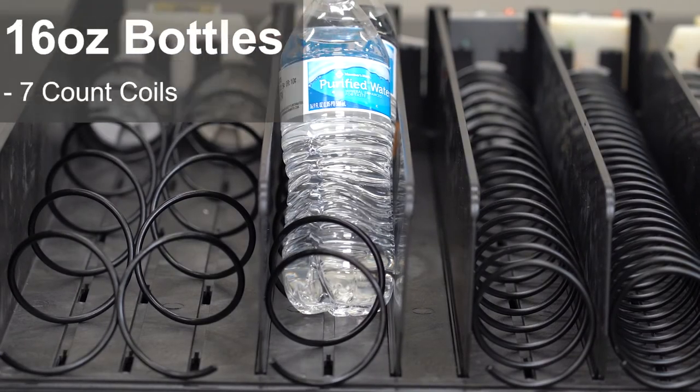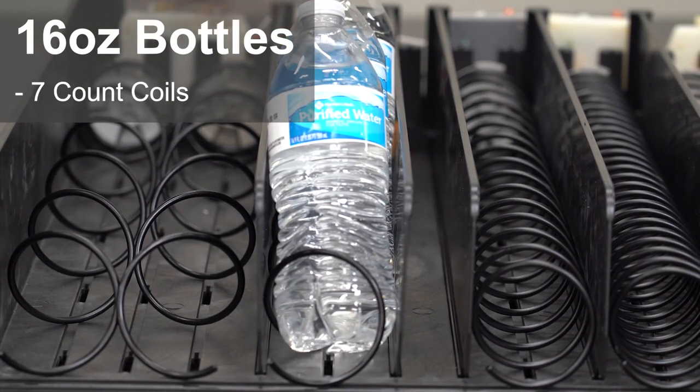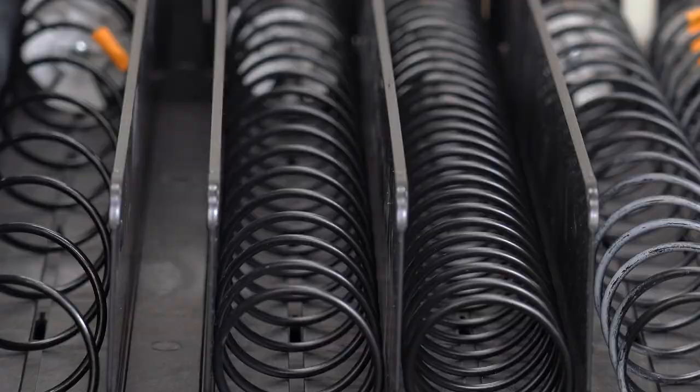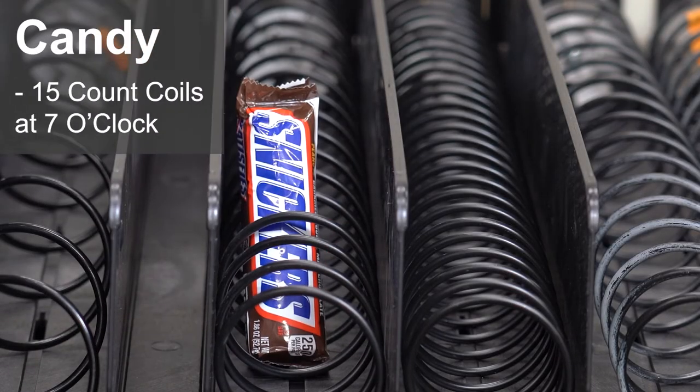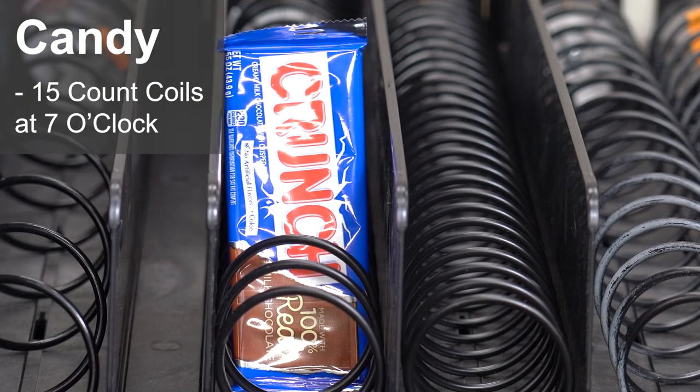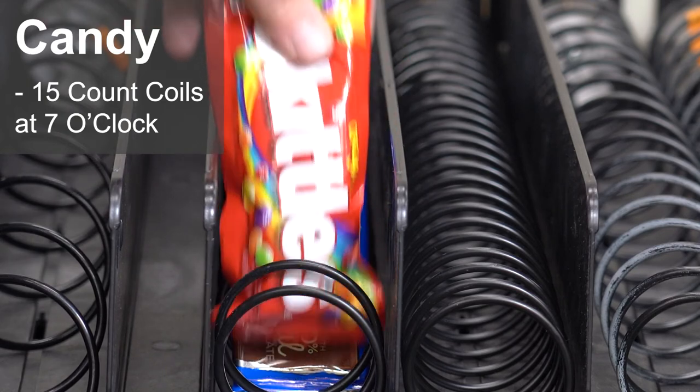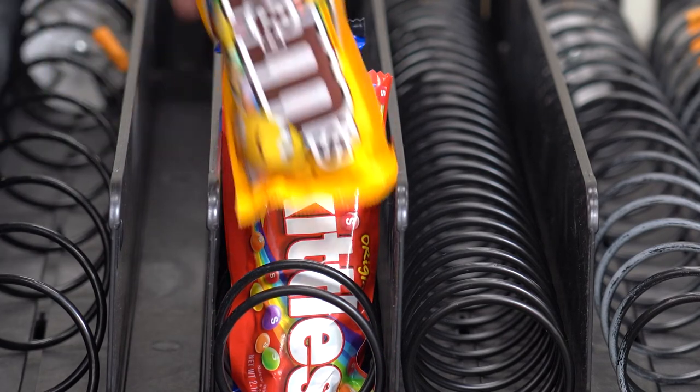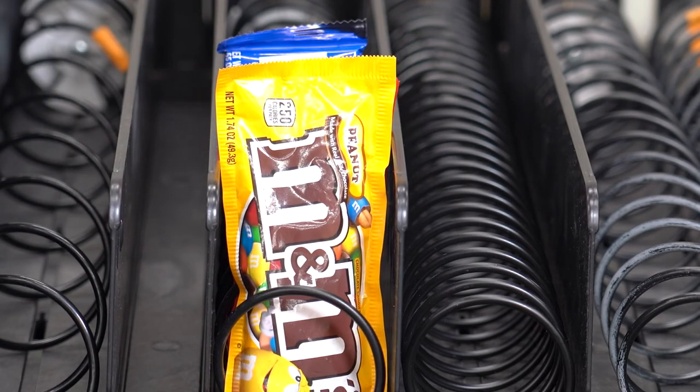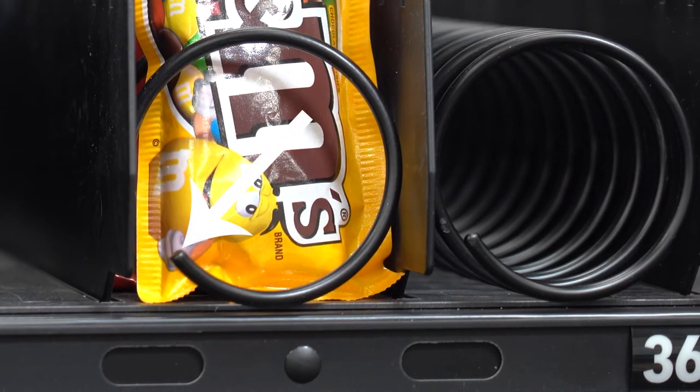When loading candy, be sure to choose a coil count that suits the product. There must be no interference when inserting the item into the coil. The item should not be too loose and be supported to provide good presentation. Place the coils at seven o'clock.